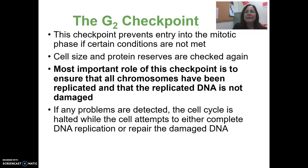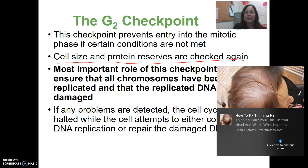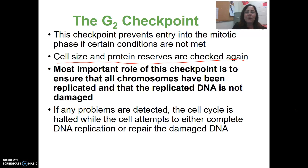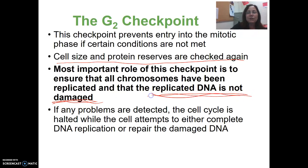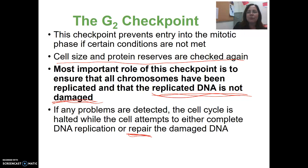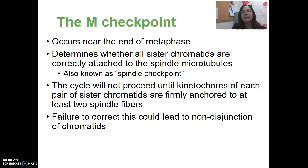The G2 checkpoint prevents entry into the mitotic phase. Cell size and protein reserves are checked again. The most important role of the G2 checkpoint is to ensure that all chromosomes have been replicated and that the replicated DNA is not damaged. If damage is found, enzymes can help repair the DNA; otherwise, the cell cycle will be halted and will not continue on to mitosis.